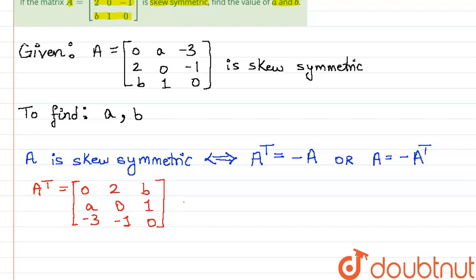Multiplying this by negative 1, we get that the negative of A transpose will be equal to the matrix 0, -2, -B, -A, 0, -1, 3, 1, 0.